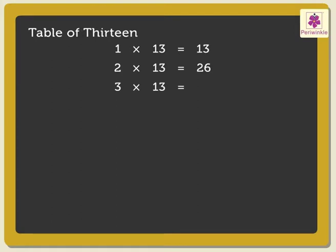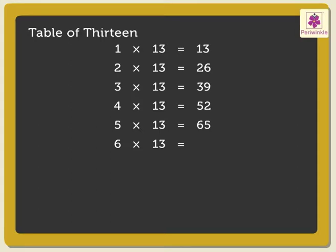3 × 13 are 39, 4 × 13 are 52, 5 × 13 are 65, 6 × 13 are 78, 7 × 13 are 91.